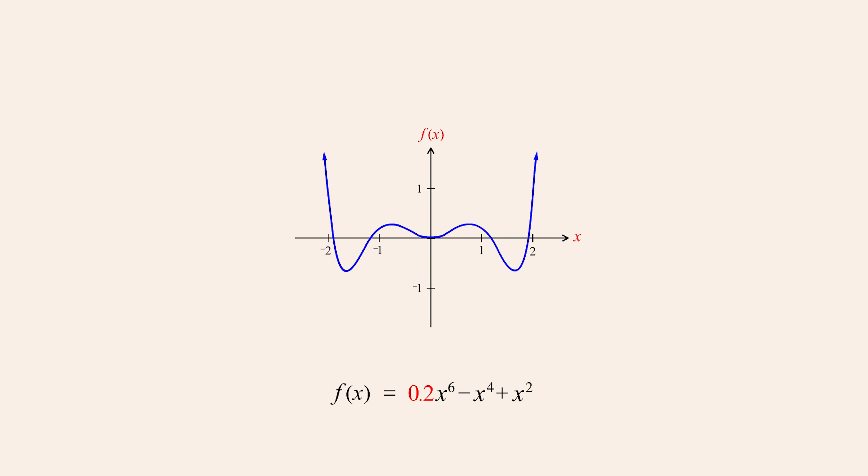With a coefficient of two-tenths, the effect of this new term is reduced enough to allow each term to control the direction of the graph over some range of x values. As x gets further from the origin, the graph first switches from a positive to a negative direction and then reverses a second time, heading back in the positive direction. No matter how small we make the coefficient, since the leading term determines the graph's end behavior, the graph will continue to grow infinitely in the positive direction, since the leading term x to the sixth power does so as well.